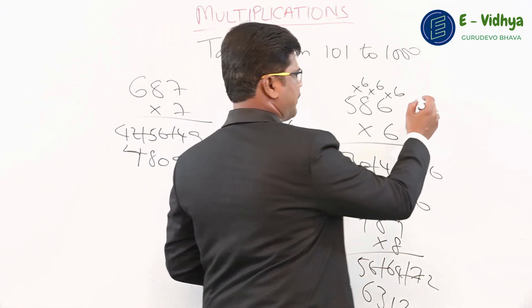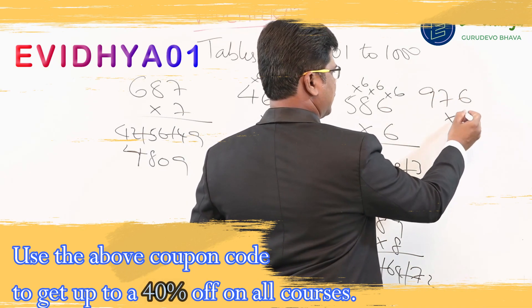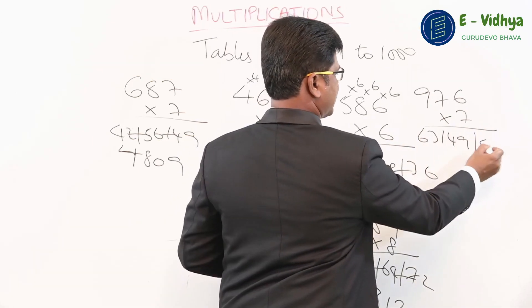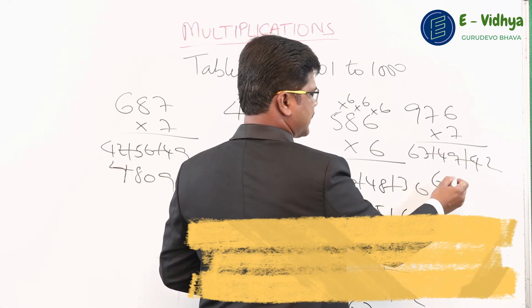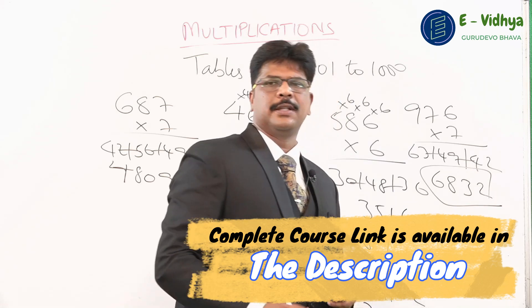Here's a last example: 976 times 7. Nine sevens are 63, seven sevens are 49, seven sixes are 42. You get 67, one number more because of the carry gives 68, and the end number is 32. The answer is 6832.